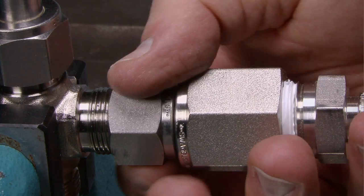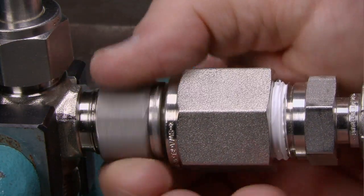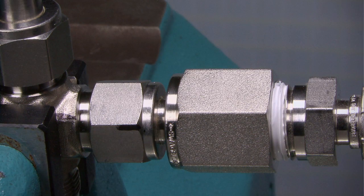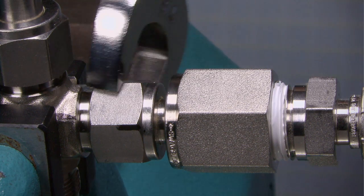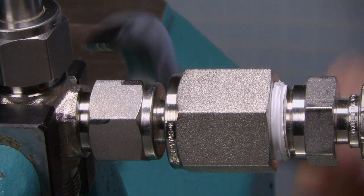Insert the tube with pre-swaged ferrules into the fitting until the front ferrule seats against the fitting body. While holding the fitting body steady, rotate the nut with a wrench to the previously pulled up position, as indicated by the marks on the tube and flats.